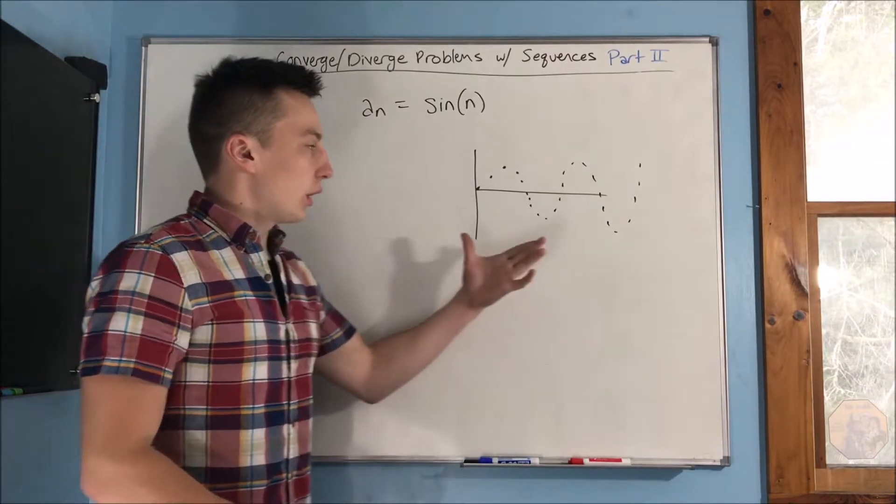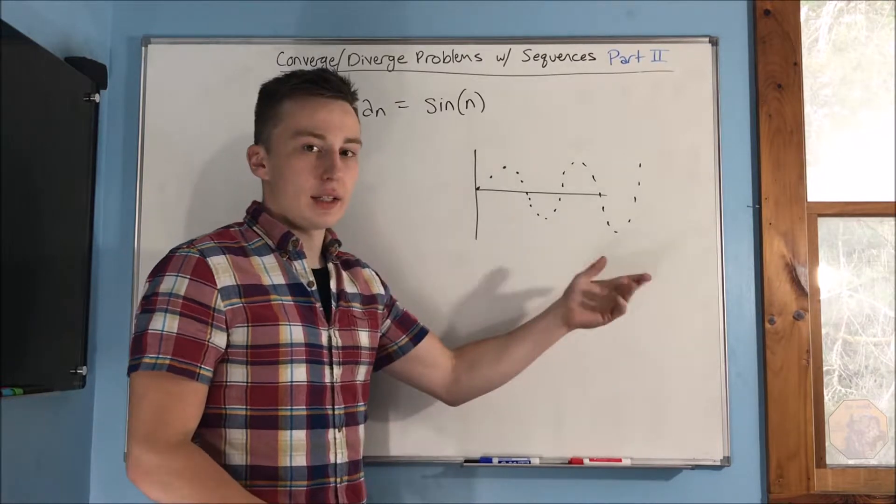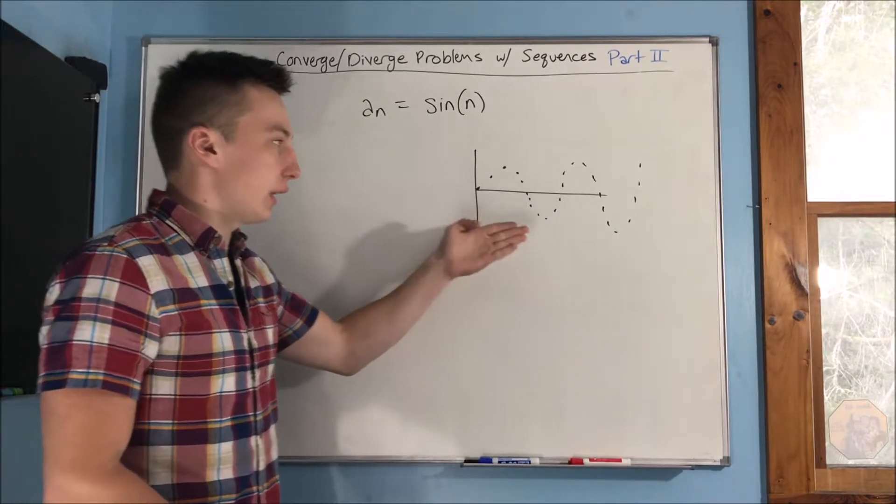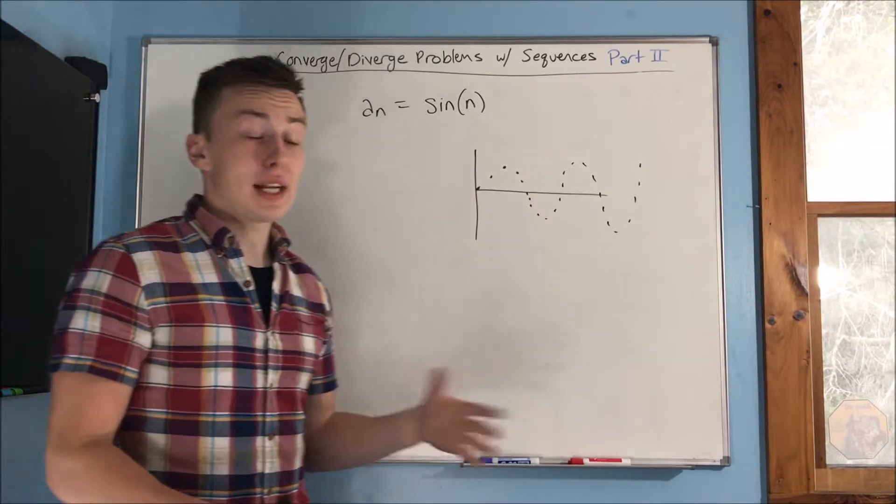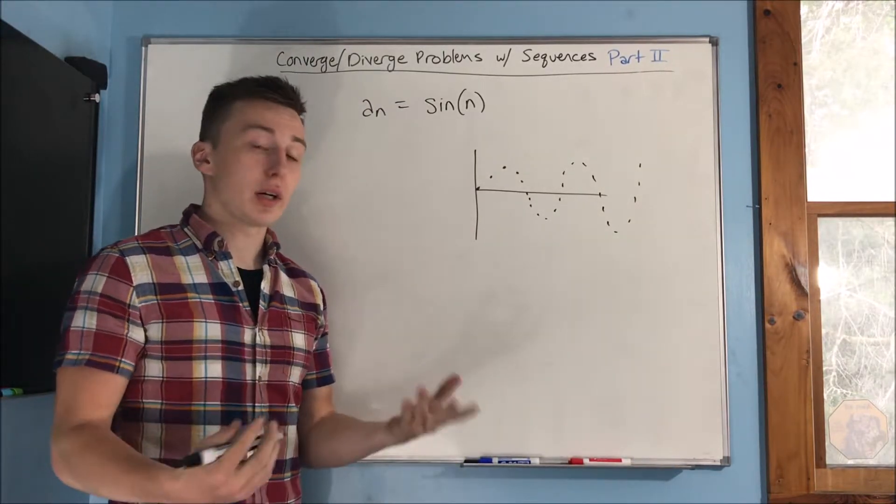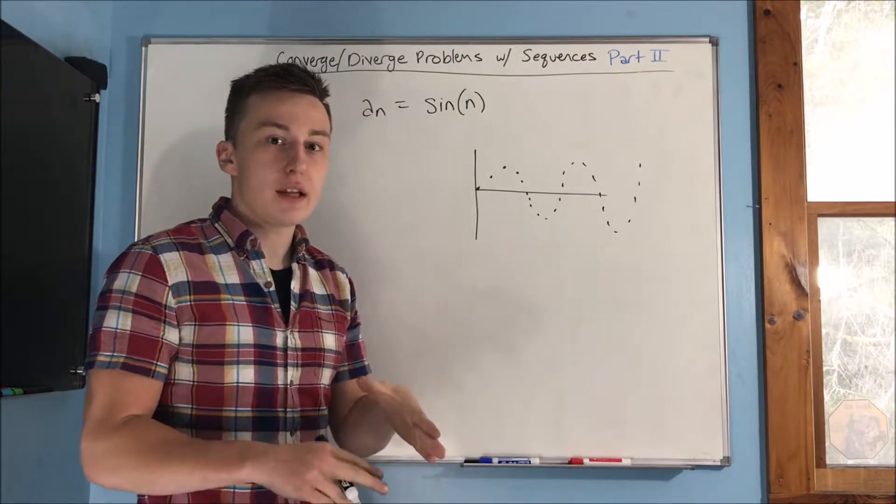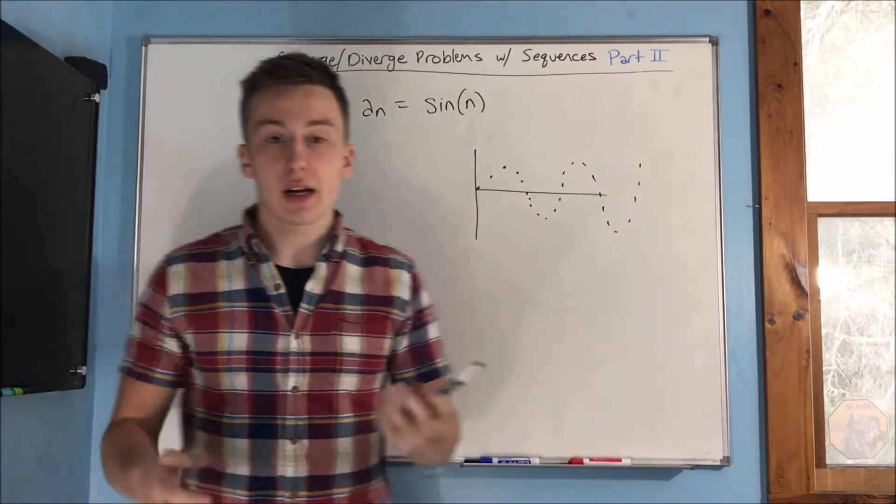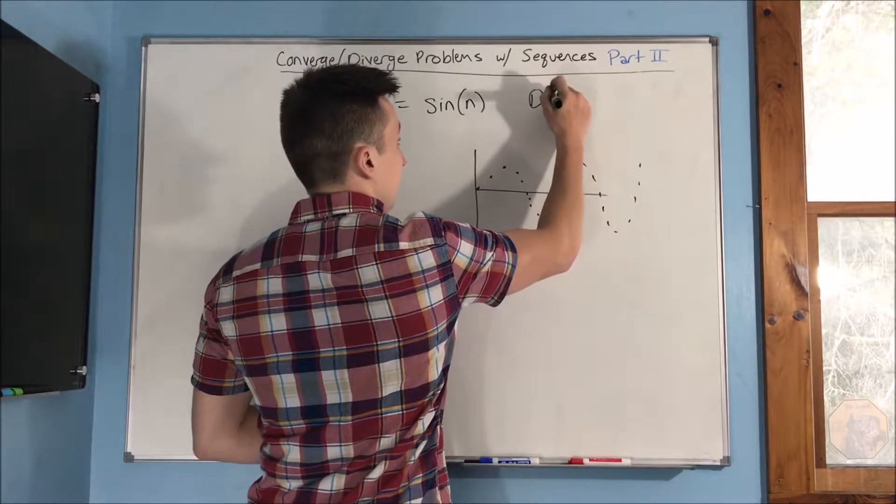So it's not going to approach anything. It's just going to be oscillating forever, okay? So that's actually going to diverge. It's just going to be diverging because it's not converging to anything. So it's diverging. That's kind of the idea. So we can say divergent.